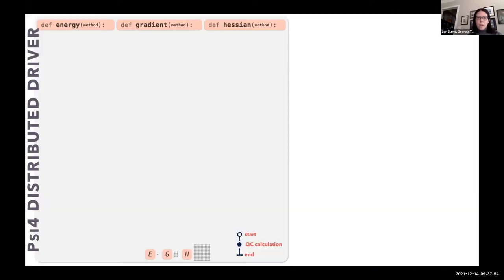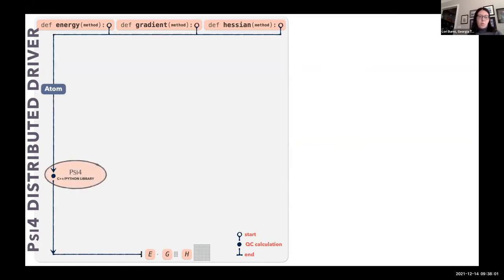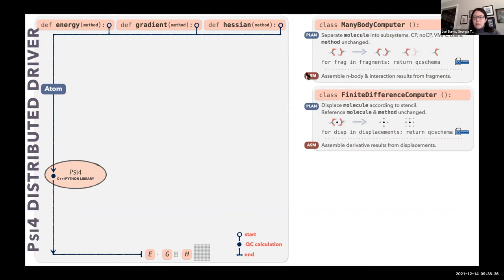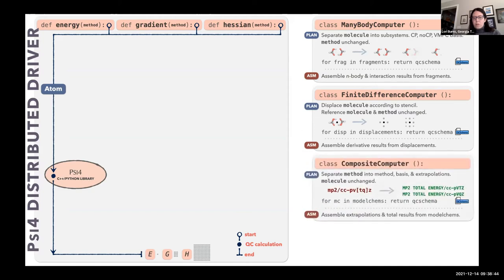To remedy some of those, we rewrote this into the distributed driver where your energy, gradient, or hessian, if it's an analytic single point calculation, we call that atomic and that runs into Psi4 directly. It produces your energy, gradient, or hessian. But those functions have been rewritten into classes. Now the many-body computer separates molecules, but instead for each fragment it returns a QC schema input file, which I'll talk about more shortly. Likewise, a finite difference plans for each displacement, it returns a QC schema input. For each composite, for the composite computer, for each model chemistry it returns a QC schema input.